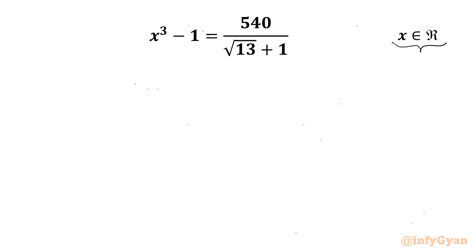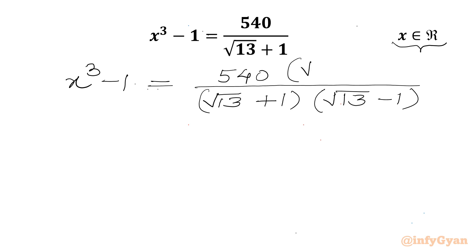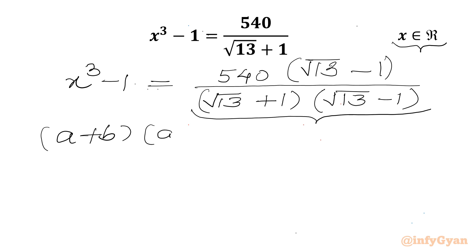So let's get started by writing our equation: x³ - 1 = 540 / (√13 + 1). Now we can rationalize our denominator. We need to multiply the numerator and denominator by the denominator's conjugate, (√13 - 1). The denominator forms the algebraic form (a + b)(a - b).